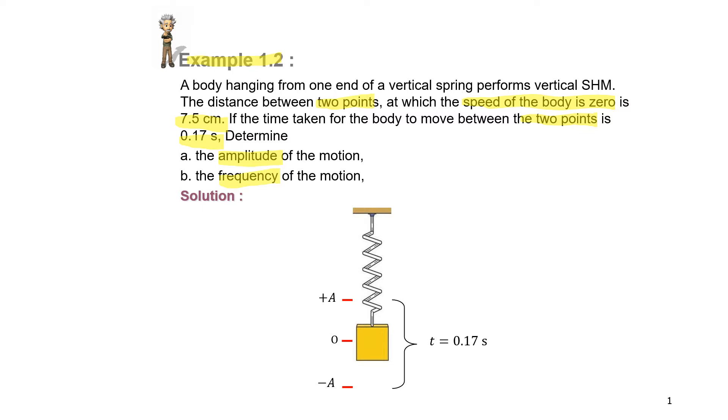So what are the information that we got from the question? The first one is the distance between two points where the speed of the body is zero. What does it mean? Speed of the body is zero. This is where the object stops and changes direction, which is at the maximum displacement. So this 7.5 cm is referred to the distance between the positive maximum displacement to the negative maximum displacement. So that is the distance from positive A to negative A.